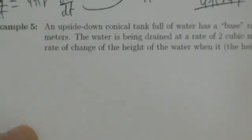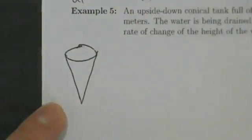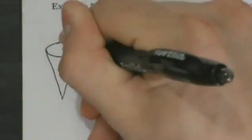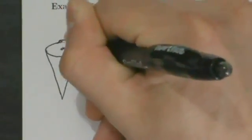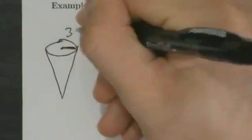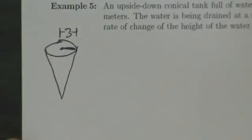Step one: draw and label a picture. So we have an upside down conical tank, so we're going to draw an upside down cone. It has a base radius of three meters — we say base because it's really talking about this part, but it's upside down. So the radius is three, three meters.